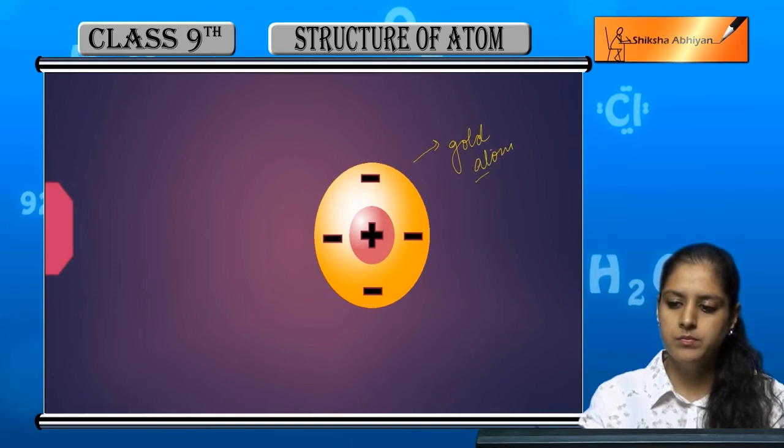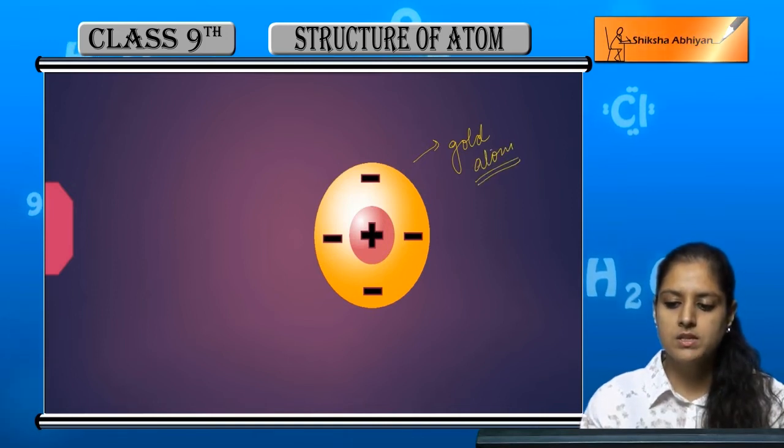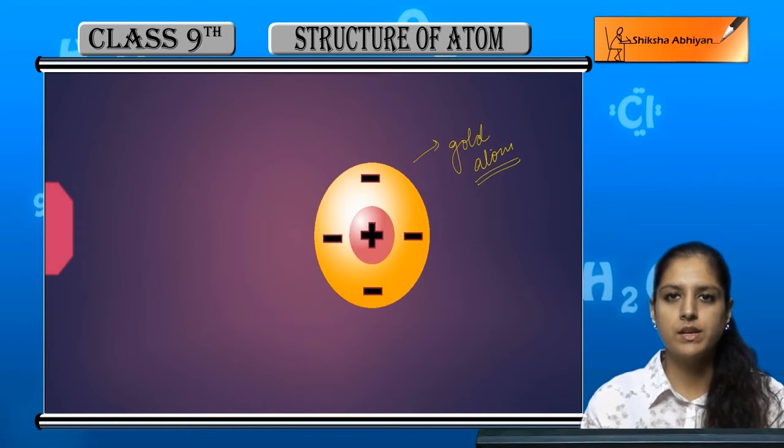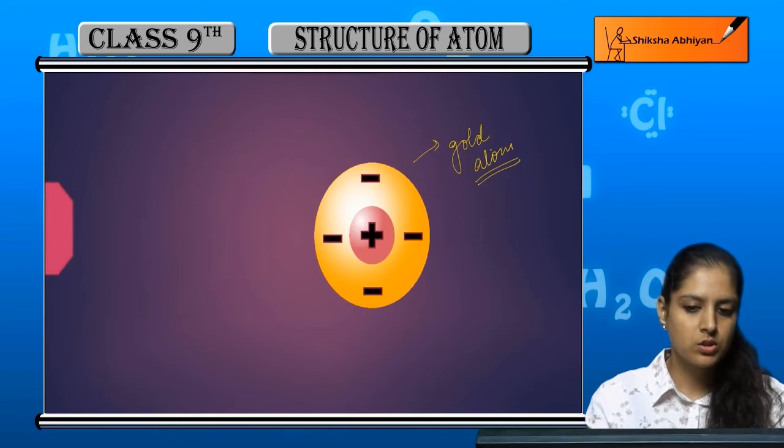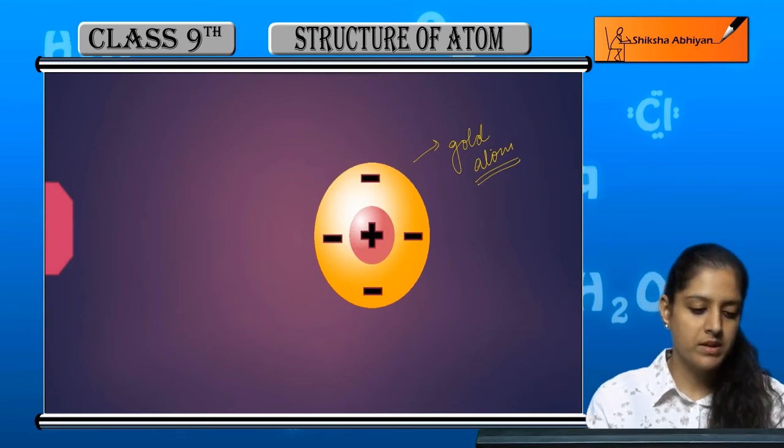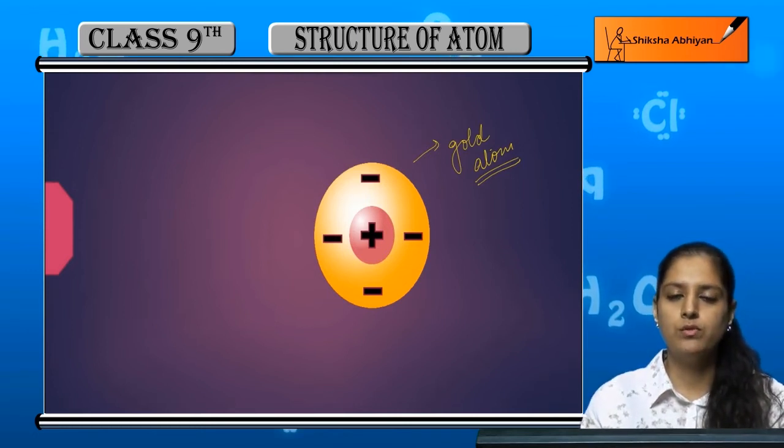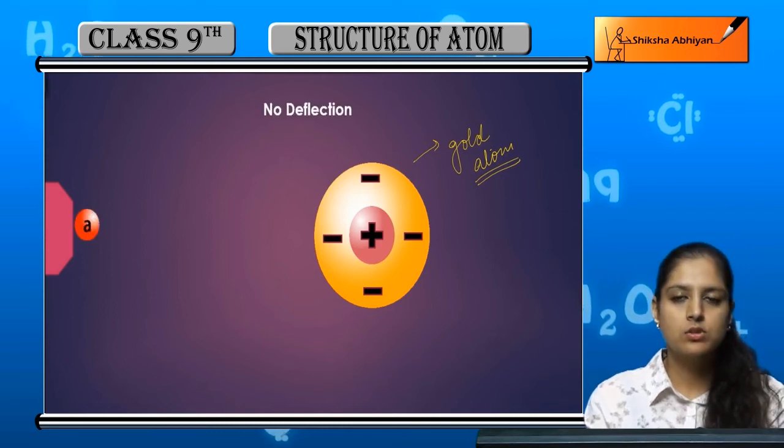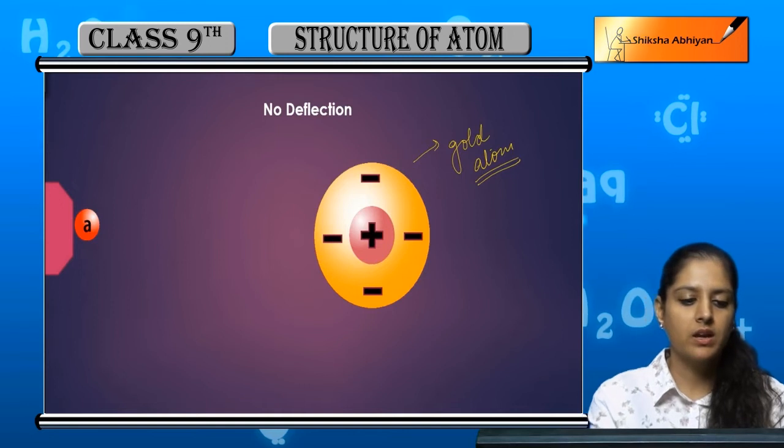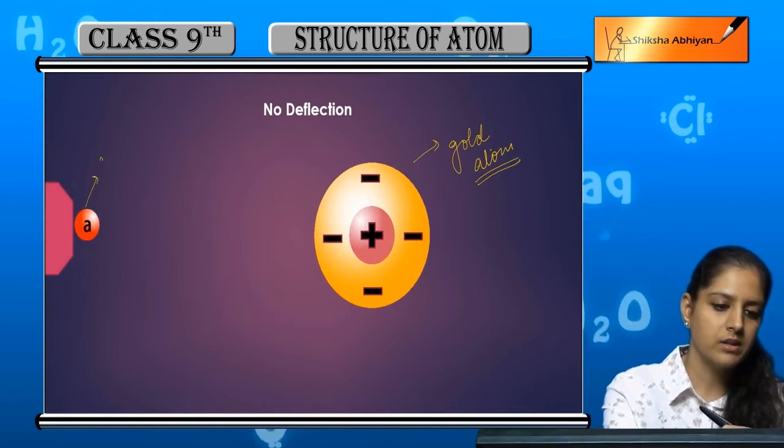The gold atom has negative electrons and positive charge in the center. For the experiment, a thin gold foil was taken and alpha particles were made to strike it at very high speed. This is an alpha particle.